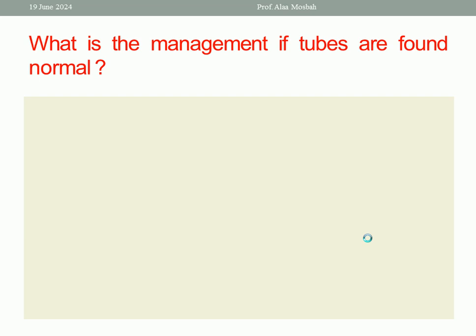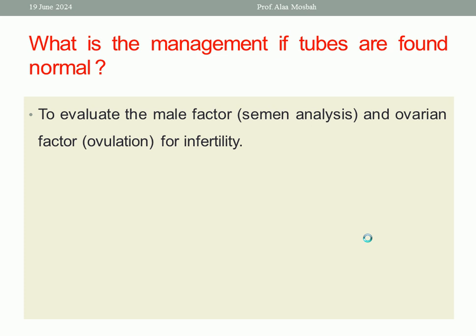What is the management if the tubes are found normal? We have basic investigations for an infertile couple. One is testing for tubal patency by Hysterosalpingogram. Other tests include semen analysis, searching for a male factor. Also, testing for ovulation for an ovarian factor — such as day 21 serum progesterone, transvaginal ultrasound with folliculometry, and so on. We will complete the basic infertility workup.